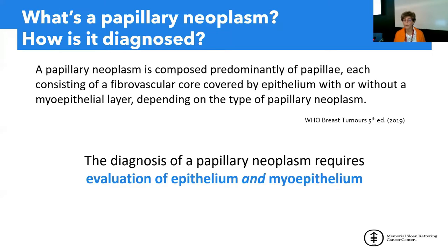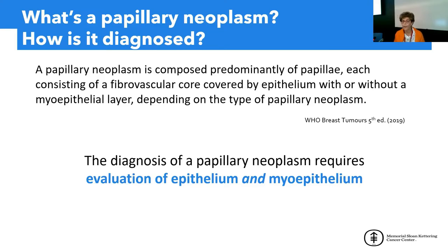What is a papillary neoplasm and how do we diagnose one? It is defined as a neoplasm composed predominantly of papillae—about 90-95% of the tumor should be composed of papillae. Each papilla consists of a fibrovascular core covered by epithelium with or without a myoepithelial layer, depending on the type of papillary lesion. To evaluate a papillary lesion, you have to evaluate these two components—epithelium and myoepithelium—to arrive at a diagnosis.